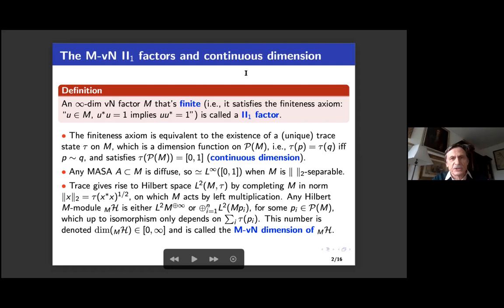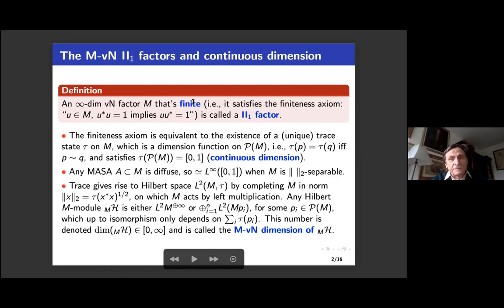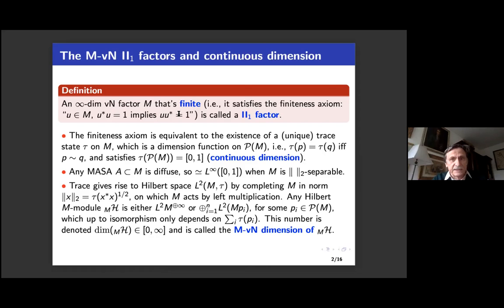Since the audience is so diverse, let me begin with some definitions. What is a II₁ factor? That's an infinite-dimensional von Neumann algebra that is a factor — it has trivial center. Von Neumann algebra meaning that it's a weakly closed sub-algebra on some Hilbert space and satisfies this finiteness axiom: projections cannot be equivalent inside the von Neumann algebra with one that's strictly less than it.